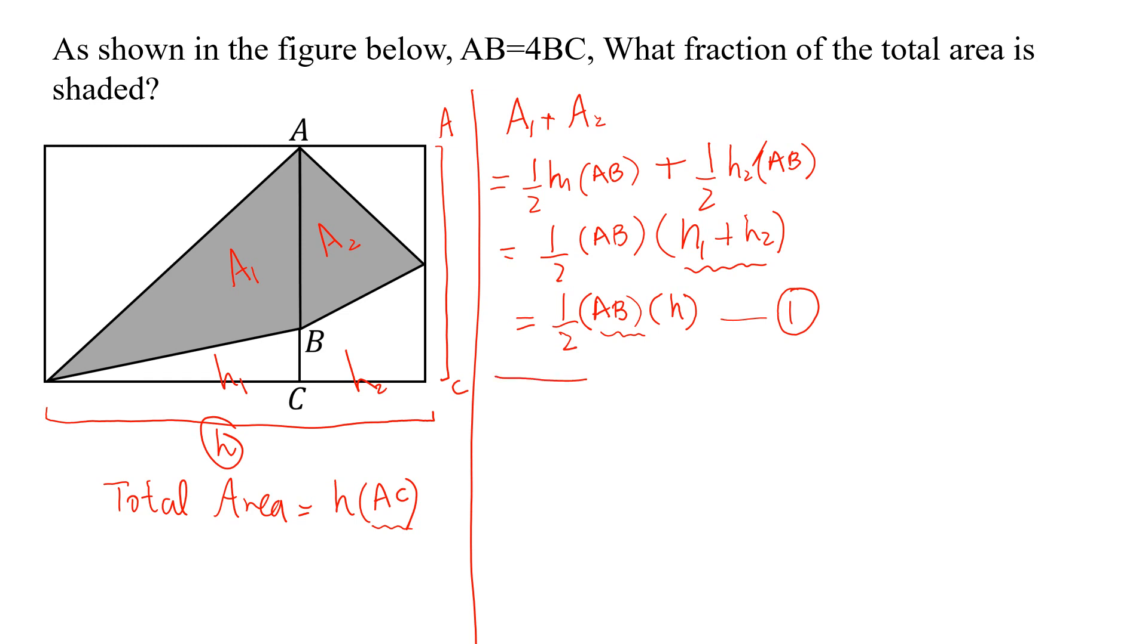Now, from the question, we know that AC equals AB plus BC. And here AB equals 4BC, so AC equals 4BC plus BC.